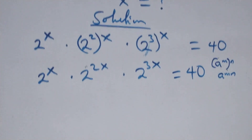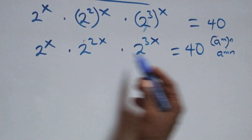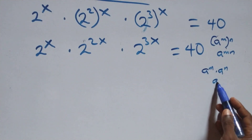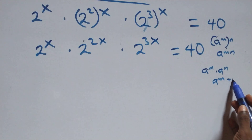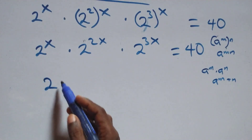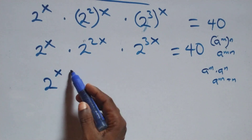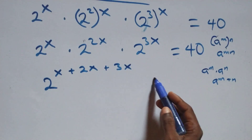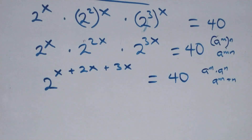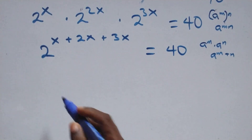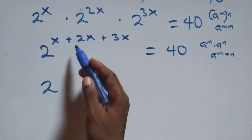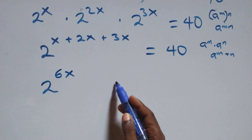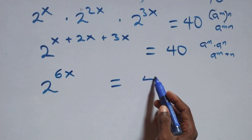Now we apply the law of indices, where a raised to power m times a raised to power n is the same as a raised to power m plus n. So here we have 2 raised to power x plus 2x plus 3x equals 40. Simplifying the exponent: x plus 2x plus 3x equals 6x, giving us 2 raised to power 6x equals 40.